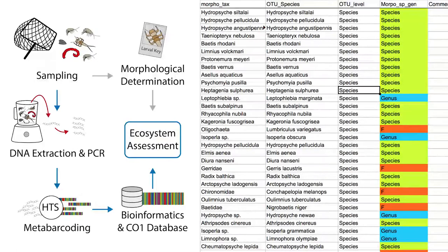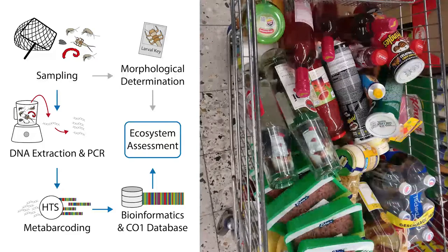The generated taxa lists can then be used to assess the ecosystem. This new DNA-based technique, called DNA Metabarcoding, is a bit like the products we had in the supermarket before, but now instead of scanning each individual product, we can scan the complete shopping cart at once.